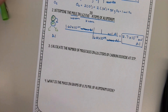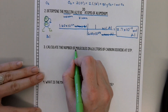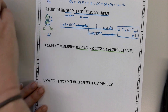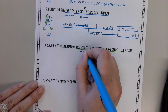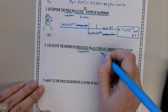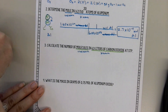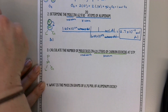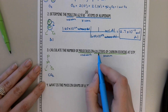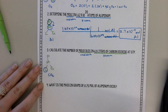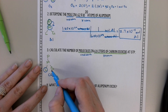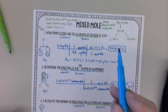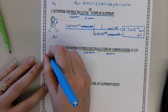Next problem: calculate the number of molecules in 63 liters of carbon dioxide. Our unknown is molecules, and our known is liters of CO₂. Molecules isn't moles and it isn't grams — molecules is another name for particles. So this is going to be a two-step problem.